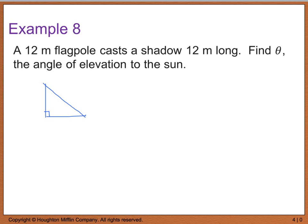So as I sketch this, I'm told that my flagpole is 12 meters tall, and we can even make this a nice little flagpole. So I have some little flag here on this pole. So this pole is 12 meters, and it casts a shadow that is 12 feet long. Well, that tells me, then, that this distance here is 12 meters, and I want to find the angle of elevation to the sun.